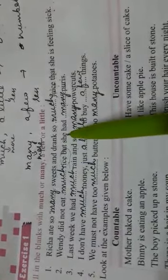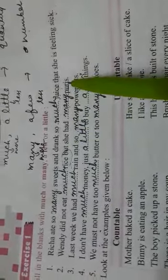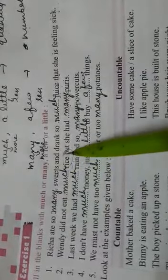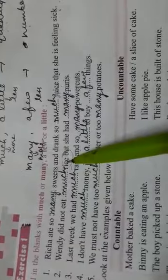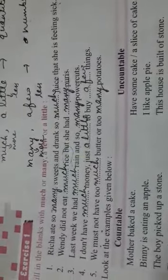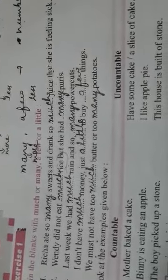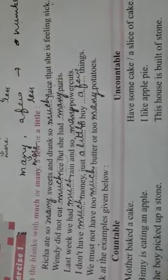Next: 'Wendy did not eat ___ rice, but she had ___ puris.' Rice — we cannot count it as a whole; we measure it by quantity. So we use 'much rice'. Puris we can count, so we use 'many puris'. Answer: 'Wendy did not eat much rice, but she had many puris.'